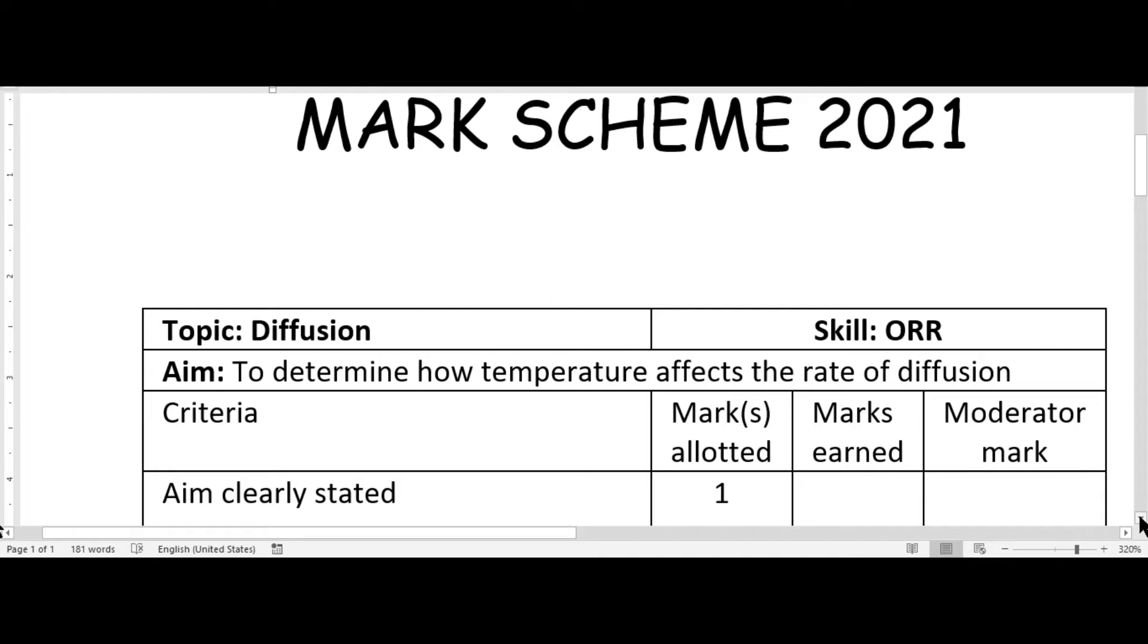Then the aim is to determine how temperature affects the rate of diffusion. Then the heading we have there is criteria then we are going to have the marks allotted for each criterion and then of course we are going to be looking at marks earned. That's the mark that the teacher will record for you and then the moderator from CSEC will have his or her mark.